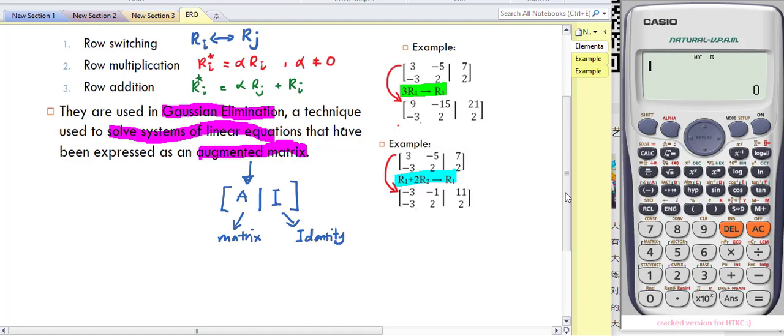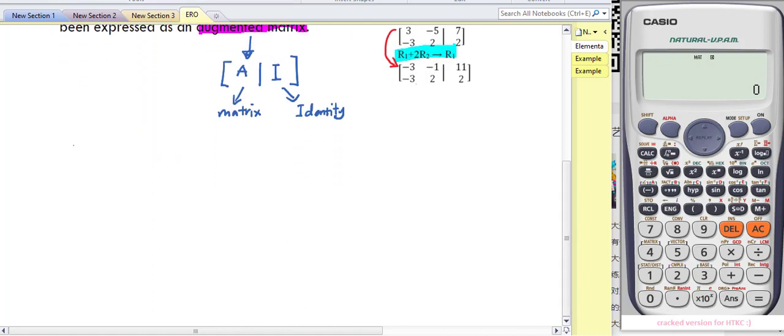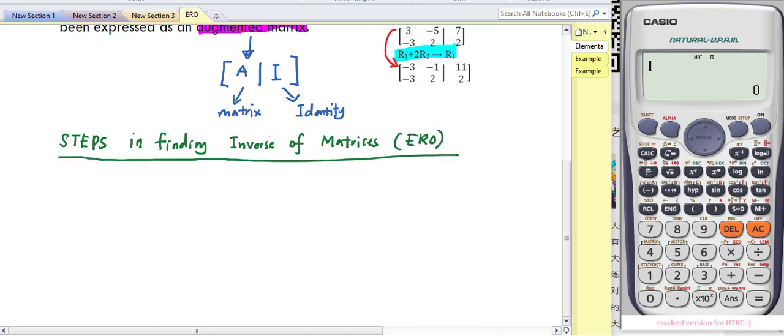There are a few steps in finding the inverse of a matrix using ERO. The whole idea starts from the augmented matrix [A|I]. We apply row operations to get the reduced augmented matrix. The matrix A becomes identity I, and the identity automatically becomes the inverse A^-1 that we're looking for.